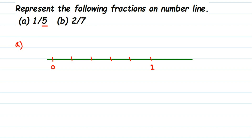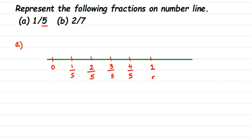5 equal parts. Don't count the lines here — look at the parts. This is the 1st part, this is 2nd, 3rd, 4th and 5th. And this is my 1 and this is my 0. So the first number will be 1 by 5, 2nd will be 2 by 5, this will be 3 by 5, this is 4 by 5, and the last one will be 5 by 5. But 5 by 5 gets cancelled — 5 divided by 5 is 1 — that's why we got 1 here. And we have to represent 1 by 5, so 1 by 5 is right here.